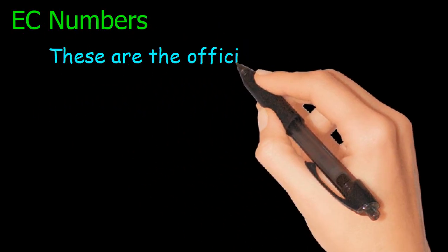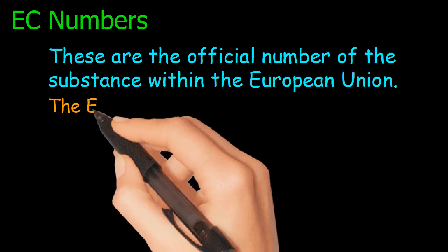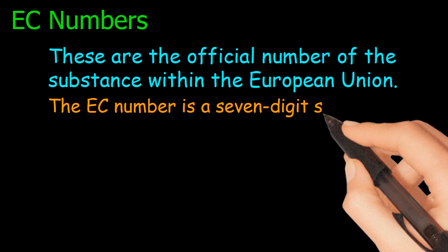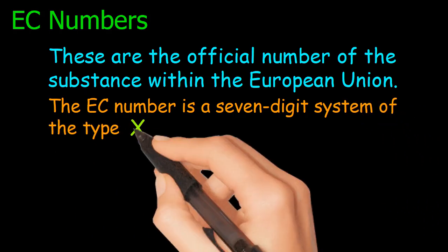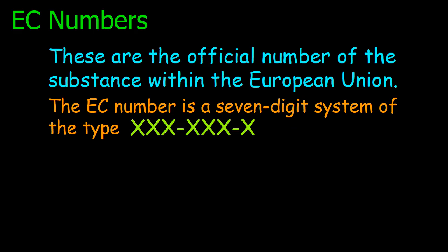EC numbers. These are the official numbers of the substance within the European Union. The EC number is a seven-digit system. It is of three types.